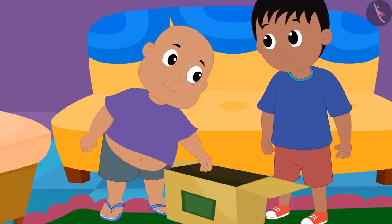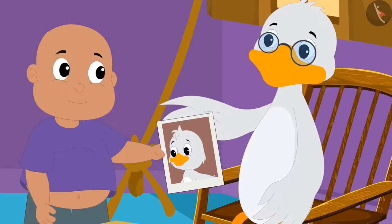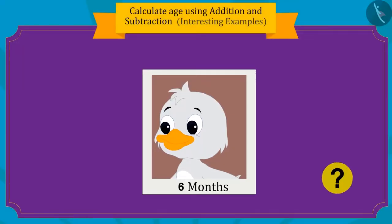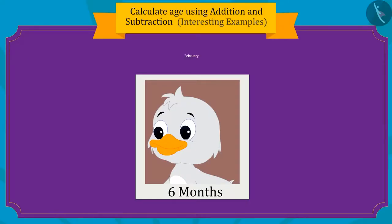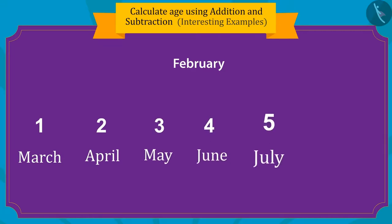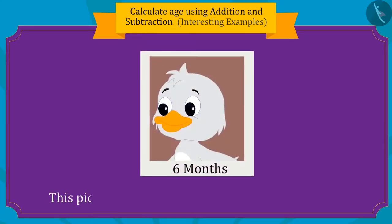Now Bablu got a picture of uncle's childhood. When Bablu asked uncle, it was revealed that uncle was only 6 months old in this picture. Children, can you tell us in which month this picture was taken in 1962? Uncle was born in February, and this picture was taken 6 months from February. Which month comes 6 months after February? August! So, this picture was taken in the month of August in 1962.